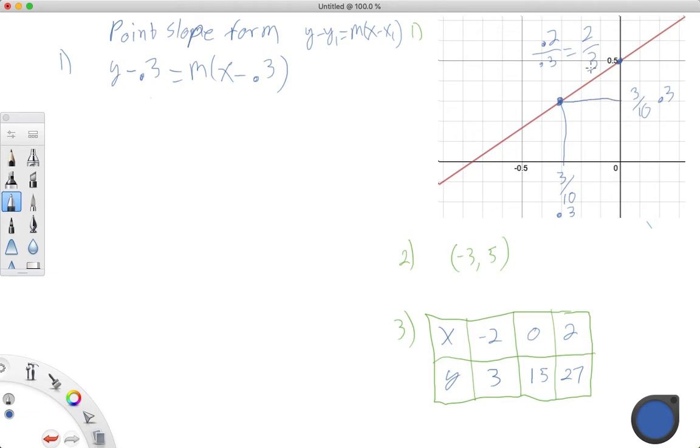And our change in x is 0.3, which is the same thing as 2 thirds. I hope everyone sees that. So really, we could just count the squares. 1, 2, 3, that's our denominator. And 1, 2, that's our numerator. So if we were to finish this out, then our point slope equation, I'm going to put it in fraction form this time, equals 2 thirds whatever our x value is, minus 3 tenths. So that's from a graph.